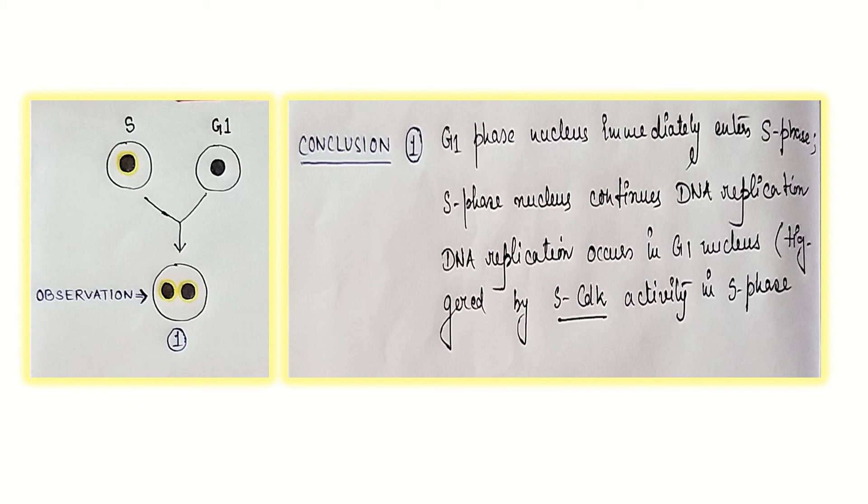The G1 nucleus comes under the influence of the S nuclei and comfortably moves into S phase. The S phase nucleus continues DNA replication. DNA replication occurs in G1 nucleus which is triggered by S phase CDK or SCDK activity in S phase.